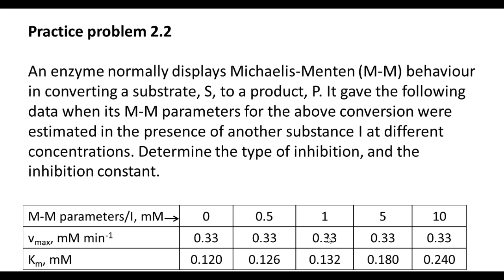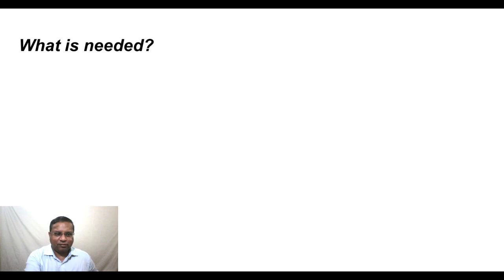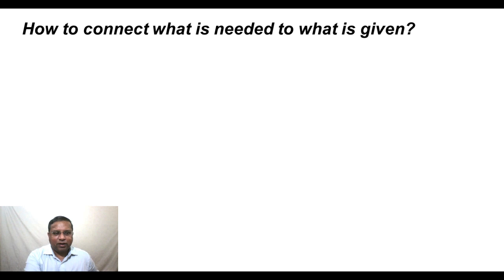Now, how do we go about it? Let us ask our regular questions. What is needed? The type of inhibition and the inhibition constant, Ki. What is known or given? The data on the Michaelis-Menten parameters Vmax and Km at different inhibitor concentrations are given. And how to connect what is needed to what is given?